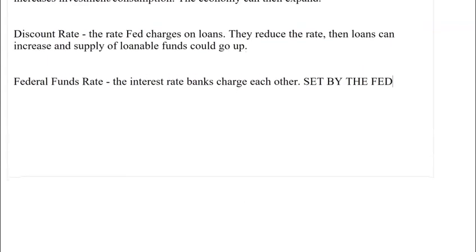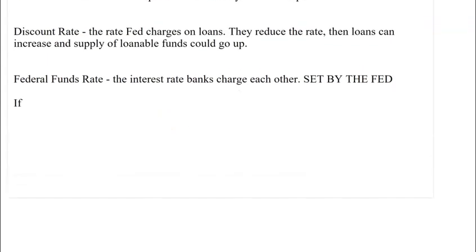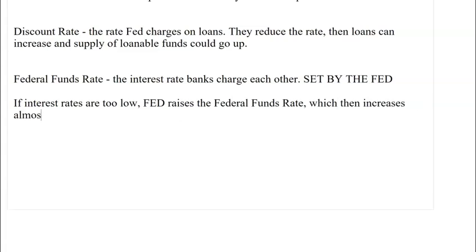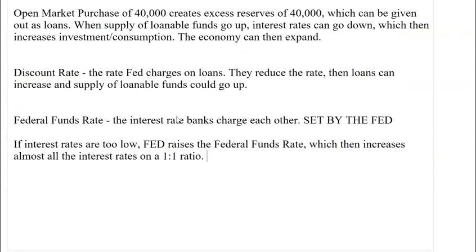If interest rates are too low and there is too much economic activity, the Fed raises the federal funds rate, which increases almost all other interest rates on roughly a 1-to-1 ratio. If the federal funds rate rises by 0.5 percentage points, all interest rates rise by approximately 0.5 percentage points. This reduces investment and cools the economy. Hopefully this helps you understand how the Fed uses different monetary policy instruments to control money supply.